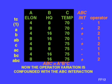Instead of confounding operator with the temperature, we confound the operator variation with the ABC interaction, which has no effect. We have confounded the unwanted effect — the operators — with something that is not going to happen: the three-factor interaction. This is a major concept in fractional factorial designs. Since the operator is not being studied in this experiment but only is an expedient in getting it done sooner, we call this particular design a blocked factorial.